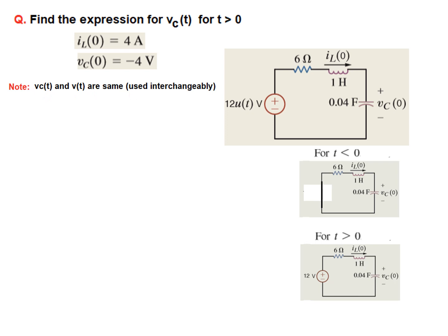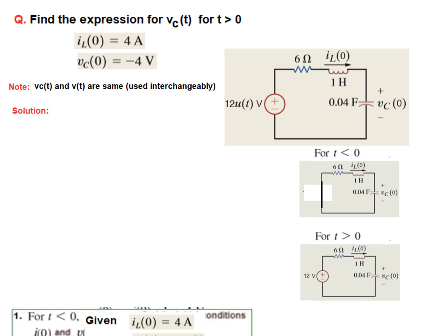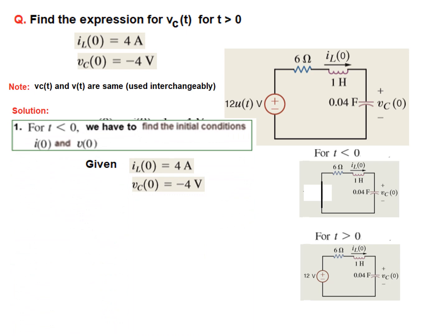V_C(T) and V(T) are the same. So we go to the first step: for T less than 0 we have to find the initial conditions, that is I(0) and V(0). Fortunately these are given here, so we will just copy that. This is our first step.